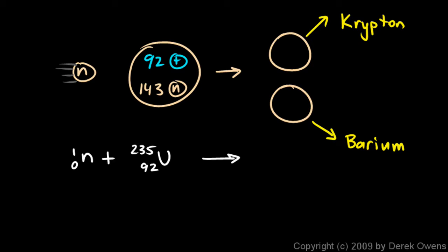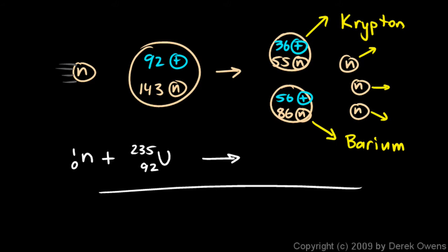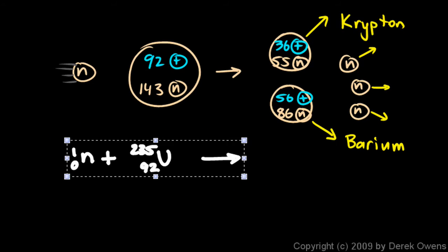I'll give you the numbers on these. The krypton has 36 protons and the barium has 56 protons. The krypton has 55 neutrons and the barium has 86 neutrons. If you add those numbers up, they don't quite work out. There's also three neutrons left over, and so the three neutrons go flying off as well. Down here at the bottom we can complete our statement of the reaction.